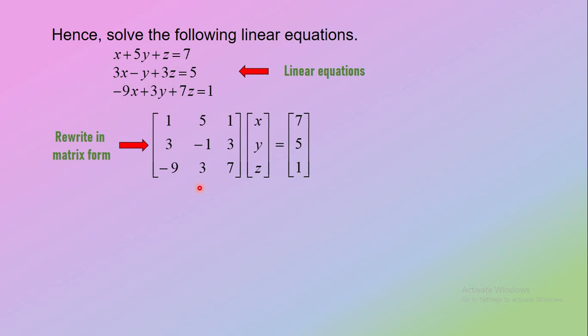You can see that the elements in this matrix are equal to matrix A. You can refer to the question. Then label the matrices as matrix A, this is the variable matrix labeled as X, and equals the constant matrix labeled as C. Why cannot label as matrix B? Because matrix B already exists. You can refer to the question.